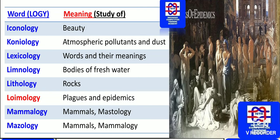The study of bodies of fresh water is known as limnology. The study of rocks is known as lithology. The study of plague and epidemics is known as loimology. The study of mammals is known as mammalogy — also called mastology. Both mammalogy and mastology refer to the study of mammals.